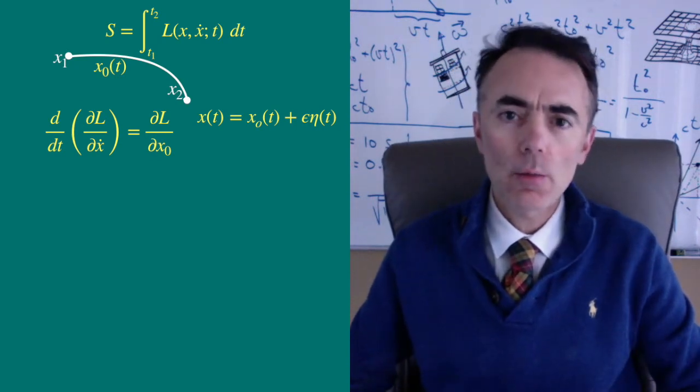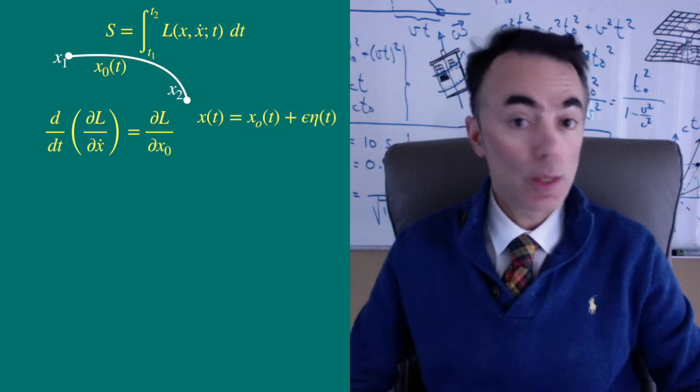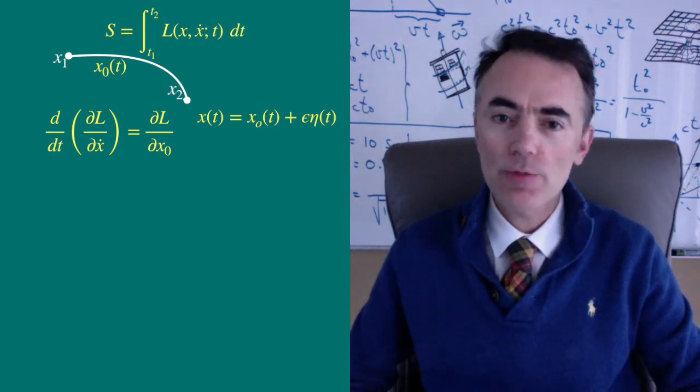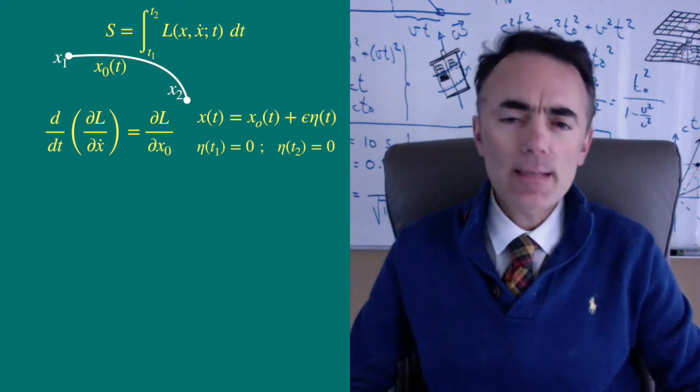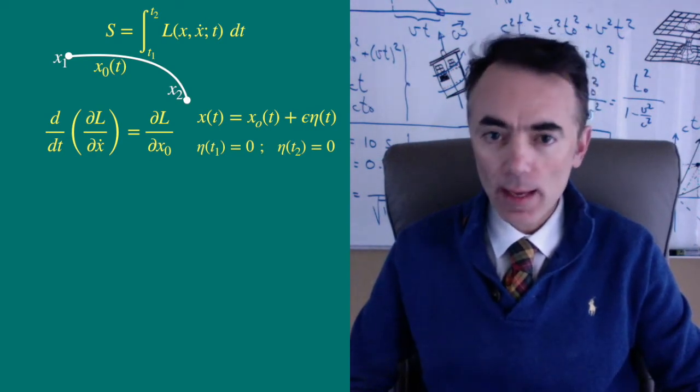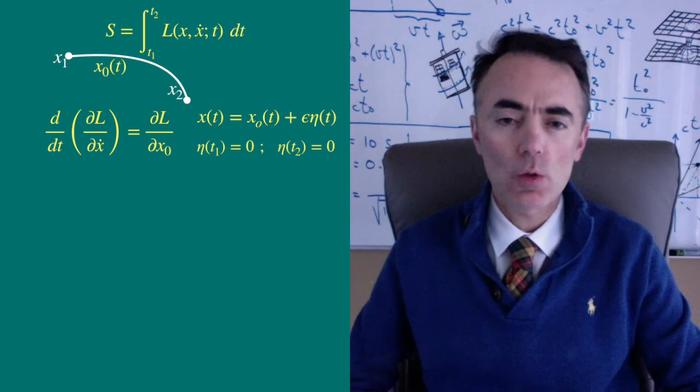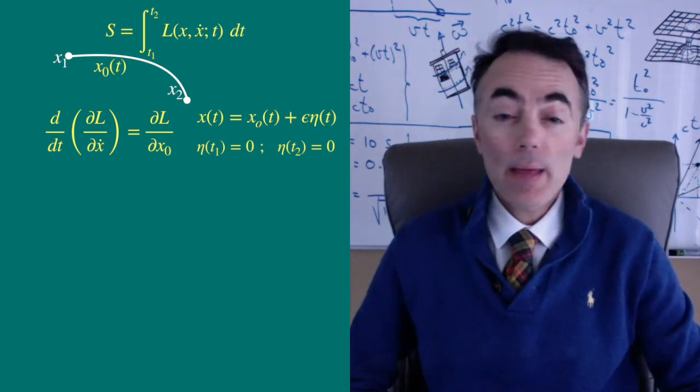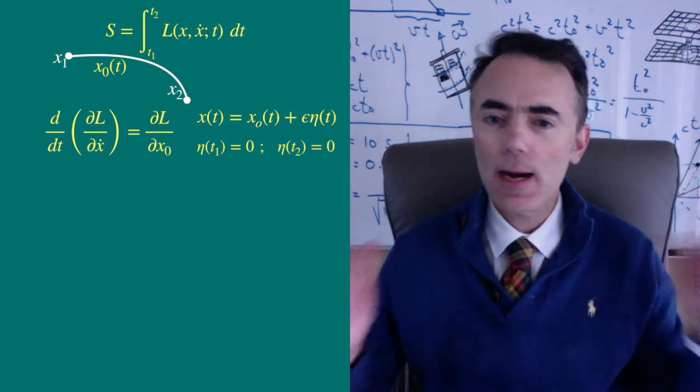Where epsilon is a number and eta of t, to keep the boundary points as fixed, needs to satisfy that eta of t1 is 0 and eta of t2 is also 0. But other than that, eta of t is an arbitrary function.